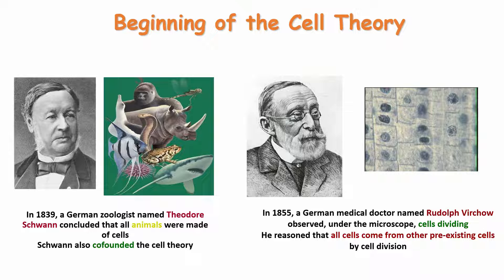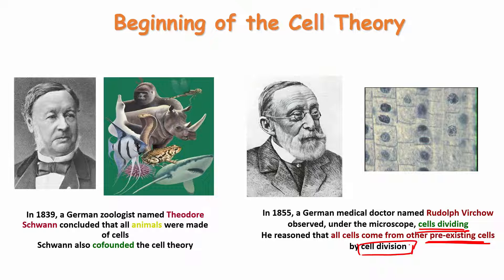In 1855, a German medical doctor named Rudolf Virchow observed cells dividing under a microscope. He reasoned that all cells come from other pre-existing cells by the phenomenon called cell division. So cell division is responsible for forming other cells — cells come from pre-existing cells.